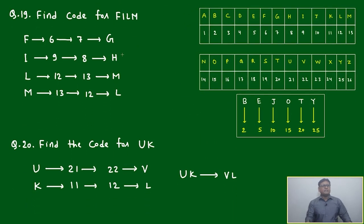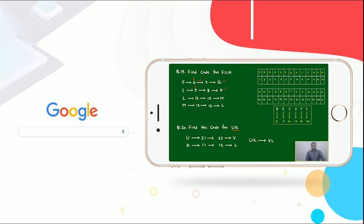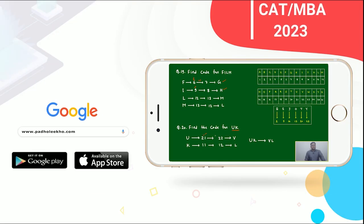I think we have done sufficient. One or two more questions we'll do and wrap up the session. Find code for FILM. Similarly, F is 6, it is even, just will add +1, it will become 7. I is 9, it is odd, it will be -1. Similar way, even +1, odd -1, it will become G-H-M-L. Find the code for UK, United Kingdom. U is 21, this is odd. Odd means you have to just make +1, it will become V. UK will be represented by V.